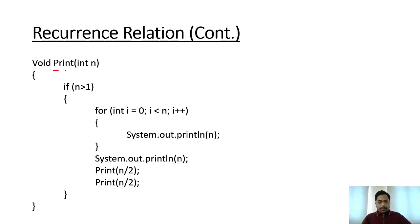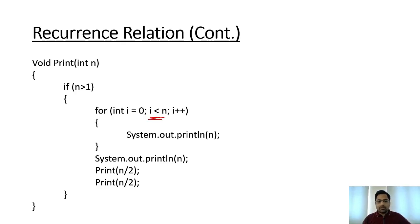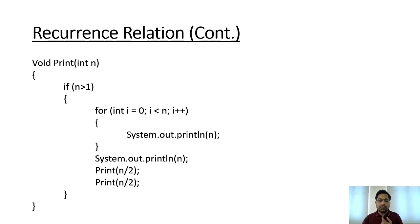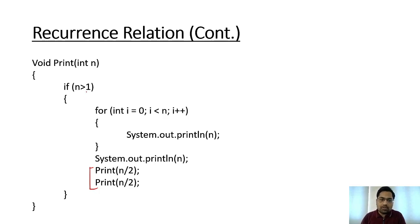A print function is called, and within it a for loop is used. From previous lectures, the for loop runs based on the stopping criteria and increment operator. We cannot directly say how many times the recursive function is called. However, an if condition checks if n is greater than 1 before the for loop and everything else runs.